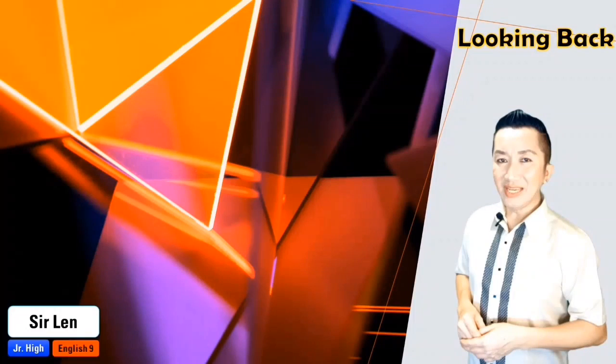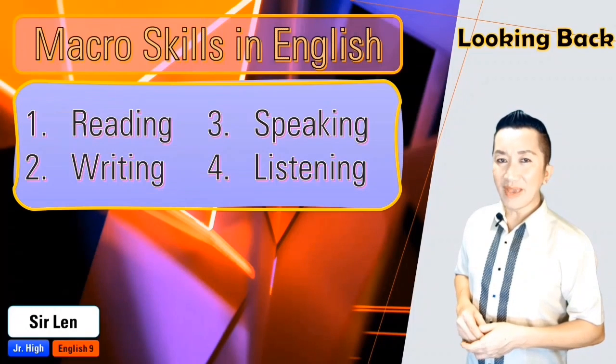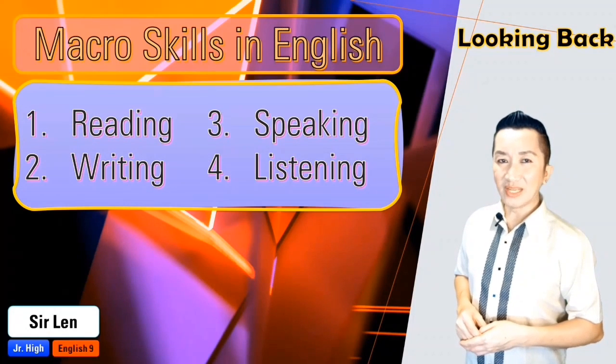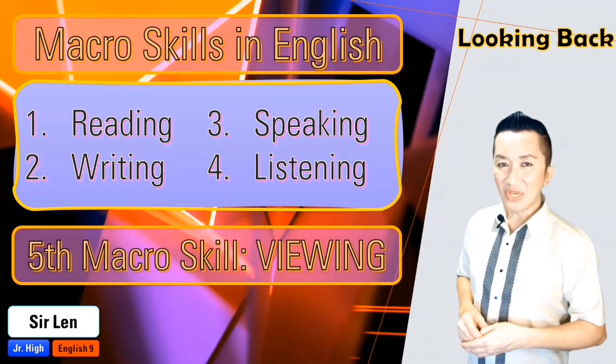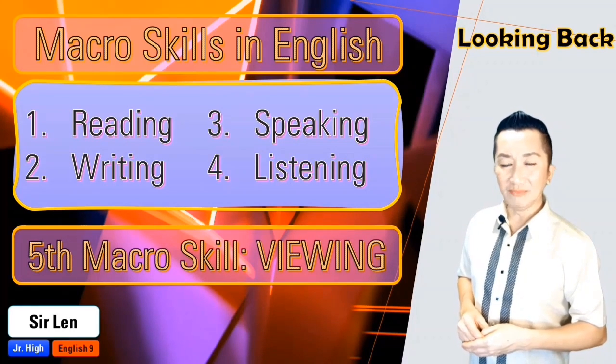Traditionally, there are four macro skills in English: reading, writing, speaking, and listening. There's a fifth macro skill and it's called viewing.